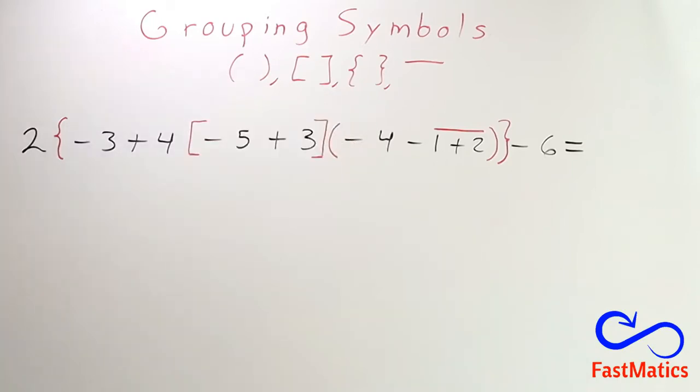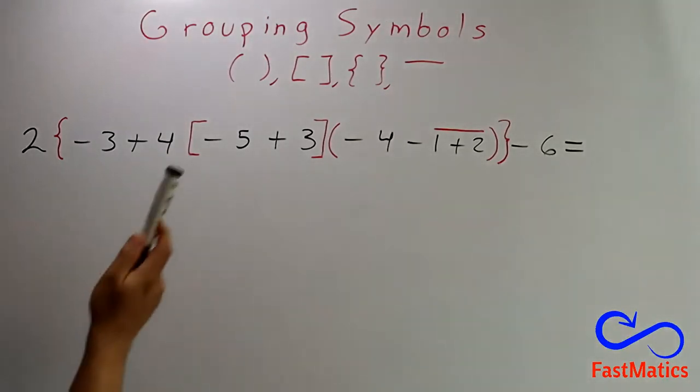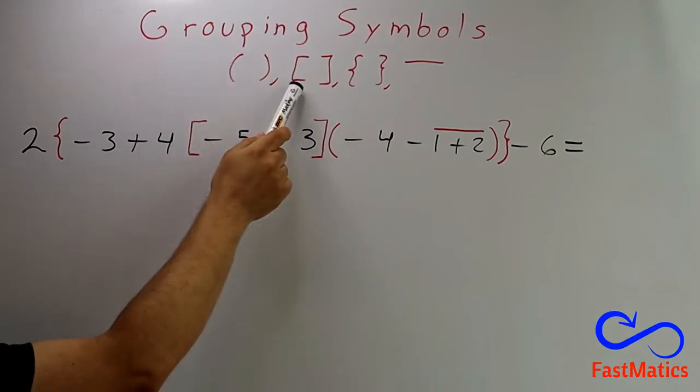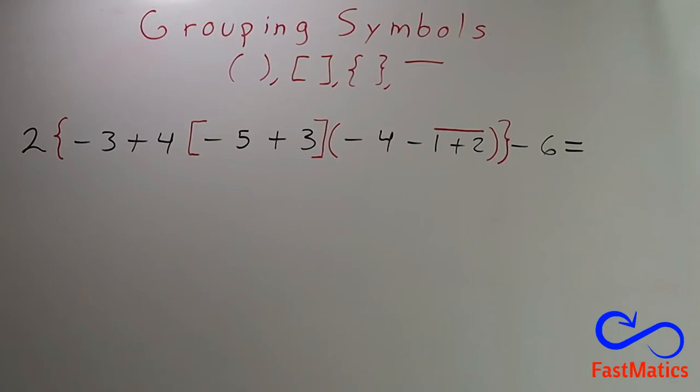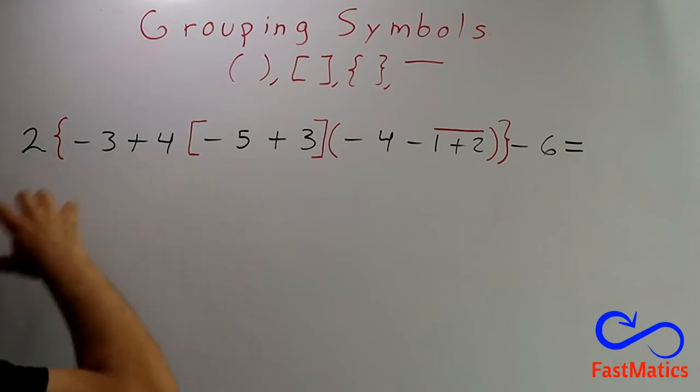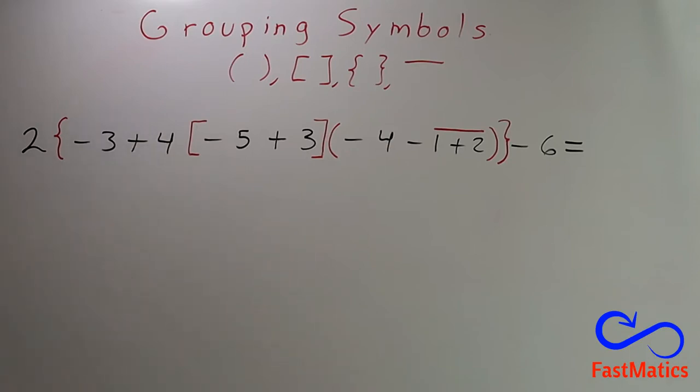First of all, we have to say that we have four grouping symbols in math: Parentheses, brackets, braces and the bin column. But why are they different? Well, because your eye could be confused if you have the same symbol everywhere. So, for distinguishing, you need different symbols.